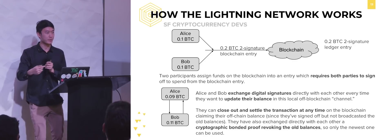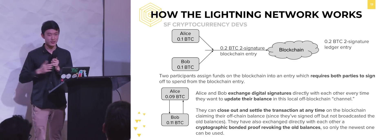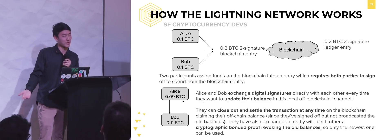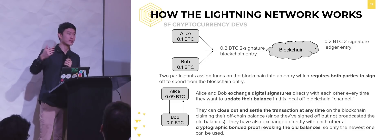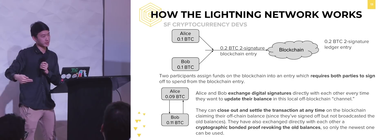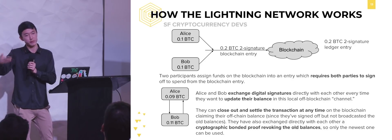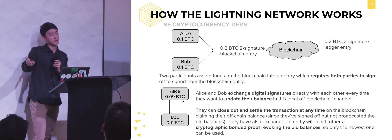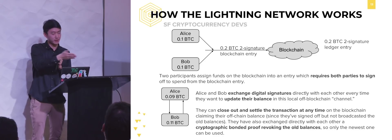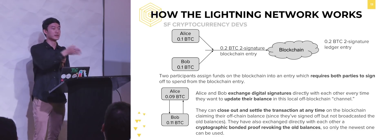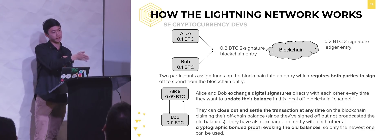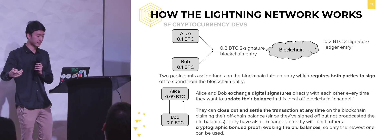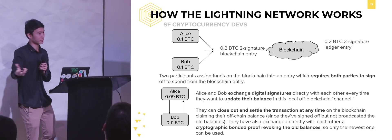Another case: what if your counterparty goes to Antarctica and you can't reach them for a month? You don't just want to lose all your money. In that case, you can broadcast the current state — because the other person isn't there to provide their signature, you just wait the standard three days and then get your money. In the malicious case, where the other person tries to broadcast some old state, you don't want them to steal your money. Because it's an old state, it has been revoked and you have a way to punish them — you publish this proof on the blockchain and you're able to take all of their money.